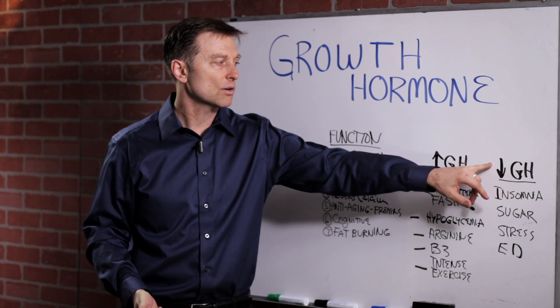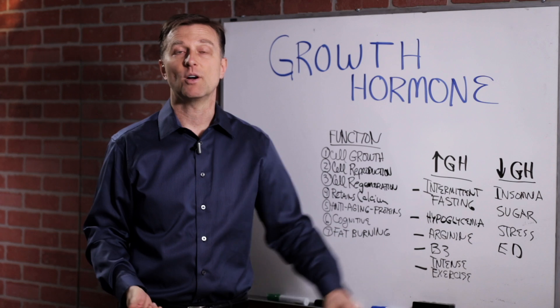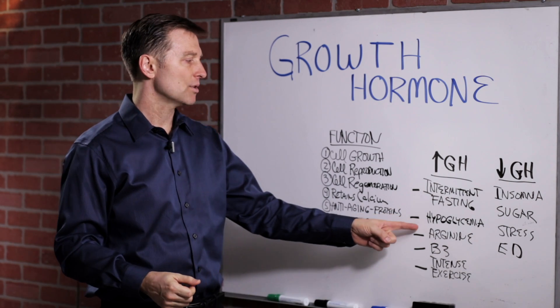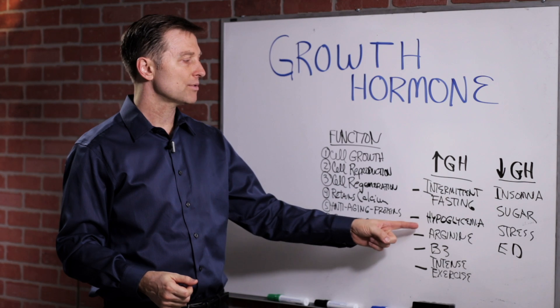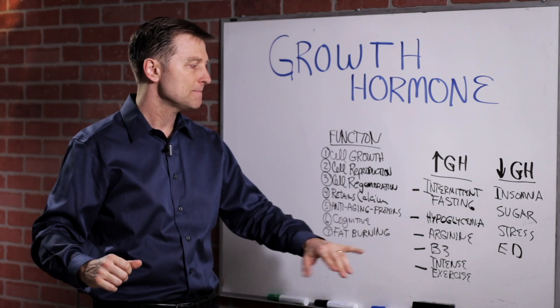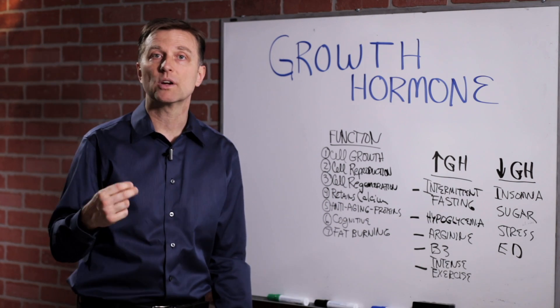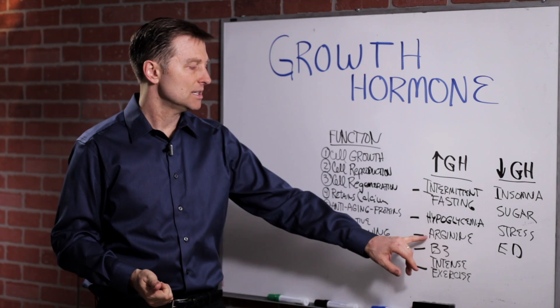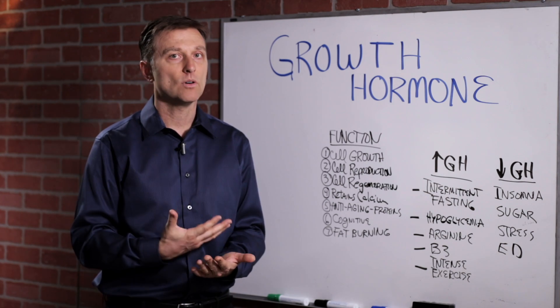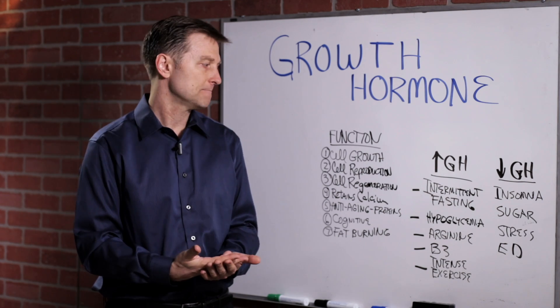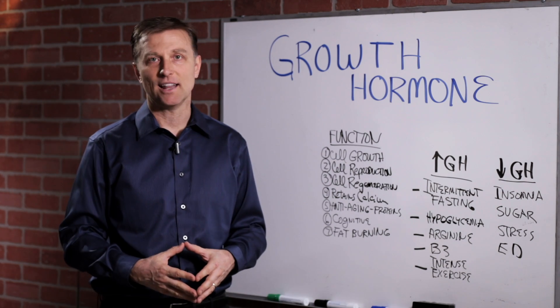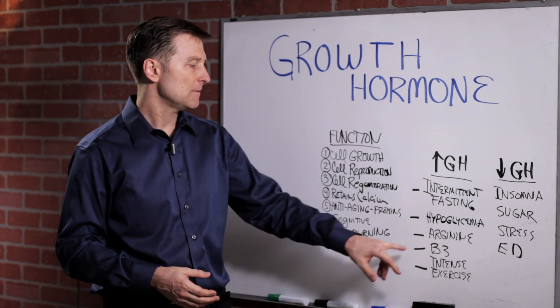So every time you spike sugar or insulin, you decrease growth hormone. So if we want to keep the growth hormone high, we want to keep the sugar very, very low and out of the diet. Arginine is an amino acid that will also increase growth hormone. Arginine is really prevalent in all types of animal products, animal meat products, animal proteins. It's not really in salad or nuts.